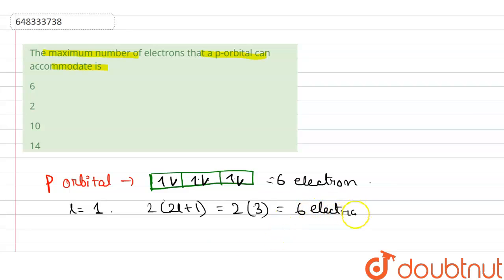By the formula, so the maximum number of electrons that a p orbital can accommodate is option A, which is six.